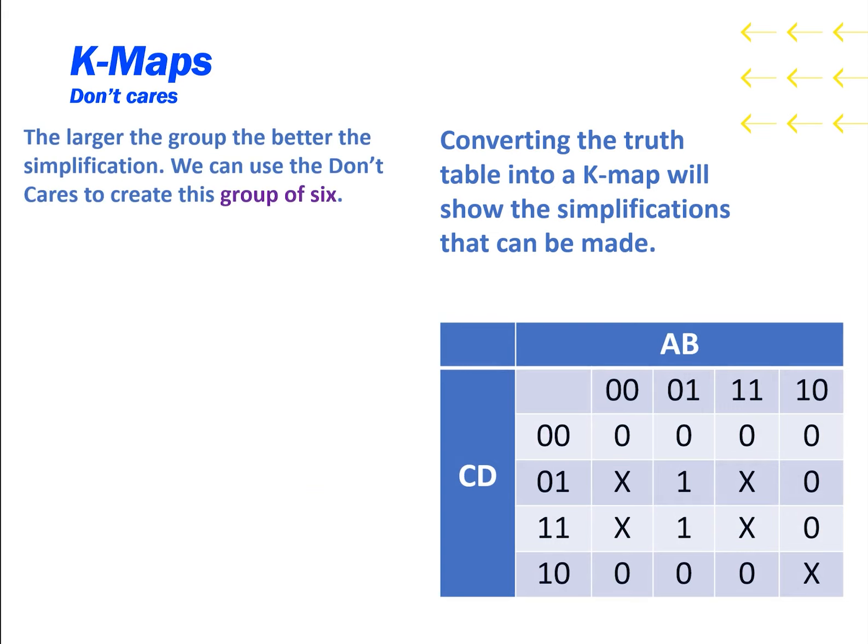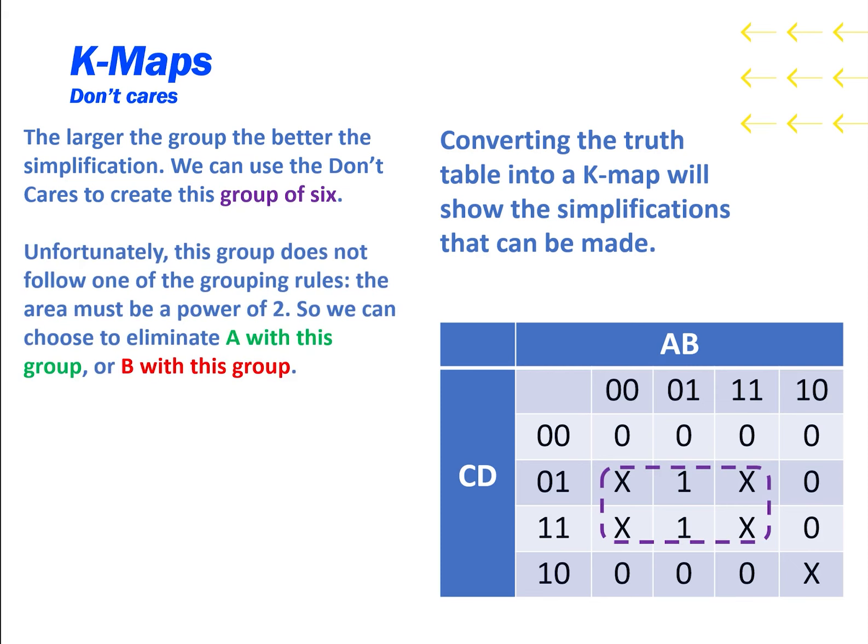The larger the group, the better the simplification. We can use the don't cares to create this group of 6. Unfortunately, this group does not follow one of the grouping rules, that being the area must be a power of 2. So we can choose to eliminate the A variable with this group, or the B variable with this group.